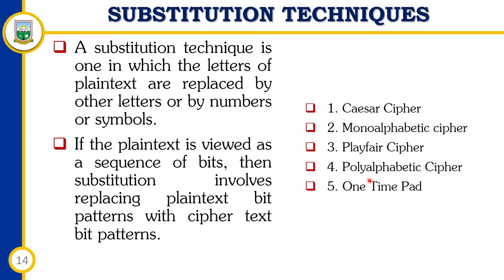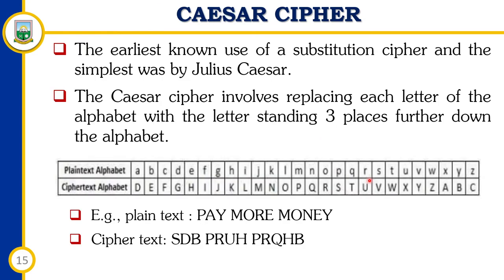The first substitution technique is the Caesar cipher, which falls under the substitution algorithm used for encryption. The Caesar cipher is the earliest known substitution cipher and the simplest, used by Julius Caesar himself. It involves replacing each letter of the alphabet with the letter standing three places further down the alphabet.